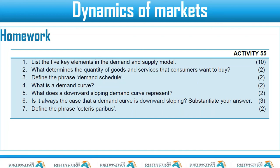Now for your homework: list the five key elements in the demand and supply model; what determines the quantity of goods and services that consumers want to buy; define the phrase 'demand schedule' in your own words; what is a demand curve; what does a downward sloping demand curve represent; is it always the case that demand is downward sloping — substantiate your answer; and define the phrase Ceteris Paribus. Thank you so much. I'll see you in the next lesson — please don't forget to like and subscribe. This is just the introduction to the demand schedule and demand curve; more is coming on how it shifts, the supply curve, and equilibrium.